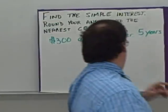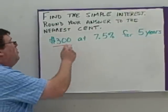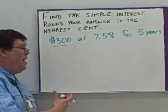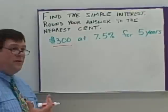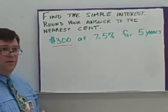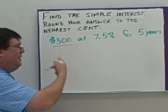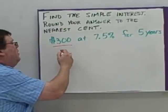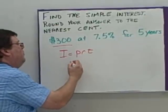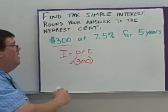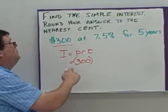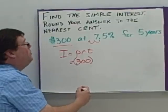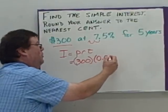The first number, $300, is the principal, because that's the initial amount either invested or loaned. It doesn't matter which side you're looking at — work with it in the formula the same way. So the principal of $300 goes right after the P in I equals PRT. I put it in parentheses because I know I'm going to be multiplying. R is the rate as a decimal, so I move the decimal point two places, giving me 0.075.